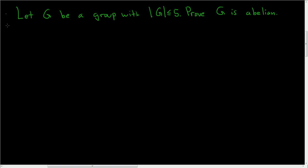Let G be a group of order 5 or smaller. We're going to prove that G is actually abelian — basically proving that every single group of order 5 or smaller is abelian.